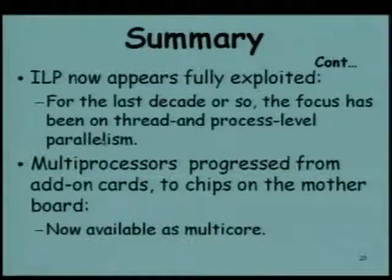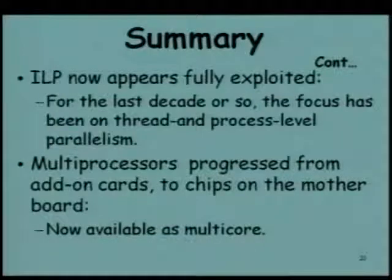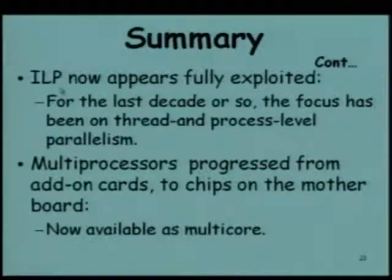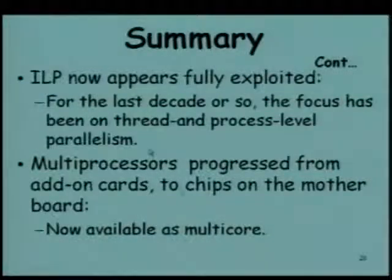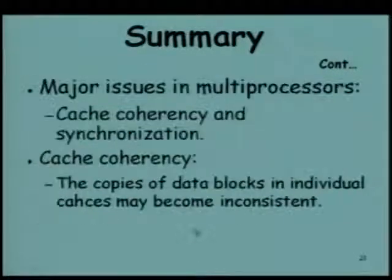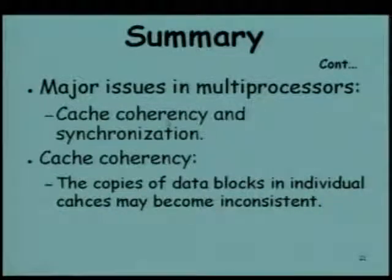Before looking at buses, let us summarize the multiprocessors we have been discussing. Multiprocessors have been the way to go for the last decade, with focus on thread and process level parallelism. In the 1980s and early 1990s, a lot of performance improvement came from ILP; now thread-level parallelism (TLP) is being more and more exploited. Multiprocessors progressed from add-on cards to multiple chips on a motherboard to multi-core processors. Two important issues are cache coherence and synchronization.